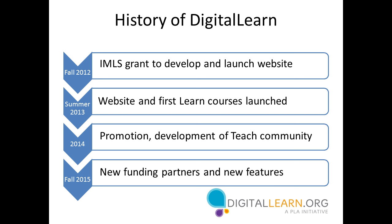A little bit about the history: PLA received an IMLS — Institute of Museum and Library Services — grant in the fall of 2012. We consulted our public library members about what they needed and what their patrons needed in terms of digital literacy training, to make sure it would meet the educational needs and literacy levels of the learners, that the length of the courses would be appropriate, and that it would really work into the flow of a public library. We hired Anil out of Denver to develop the strategy and manage the technology, and we hired KICSL, a training and instructional design firm, to develop the courses, and we launched them in the summer of 2013. The first set of 14 courses was up in 2013, and then in 2014 we added a community of practice for digital literacy trainers to share information.